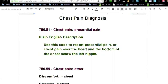That's where the definitions and anatomy and physiology really play a part in the coding. So you use this code to report precordial pain or chest pain over the heart at the bottom of the chest below the left nipple.